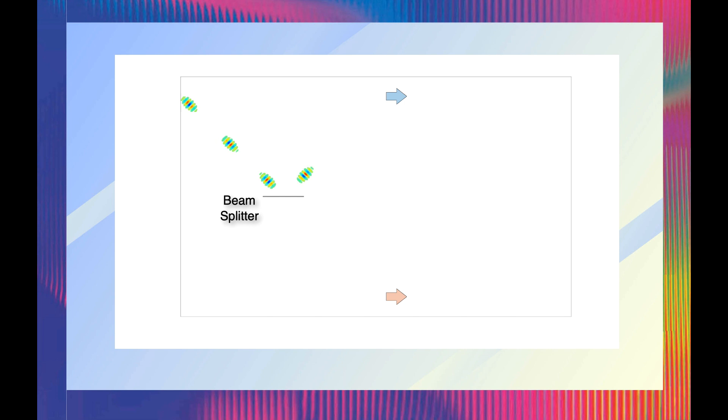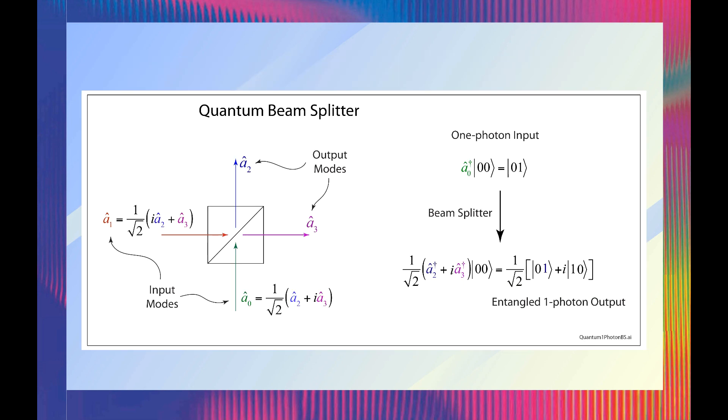Now let's look at a semi-classical picture of a 50-50 beam splitter. Each photon can be considered to have a 50% probability of reflecting or transmitting. However, we have to remember that the quantum beam splitter produces a linear superposition at the output. Therefore, each photon hitting the beam splitter is split into a linear superposition of each photon both reflecting and transmitting.